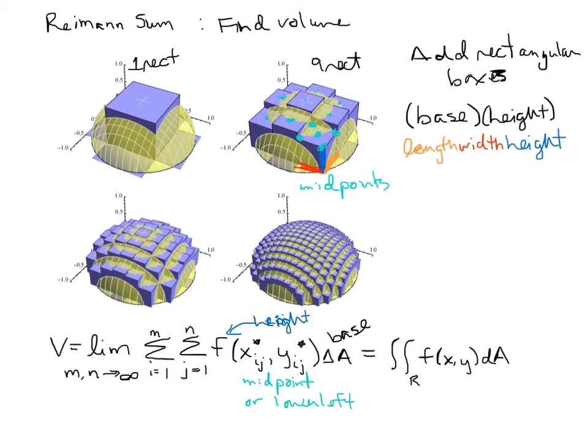So basically, we're just saying, let's add up all the midpoints. When we plug those in and get a height, we're going to add height times the base together.